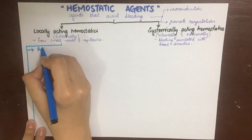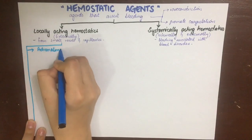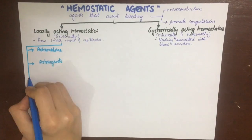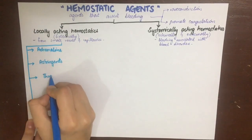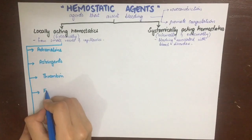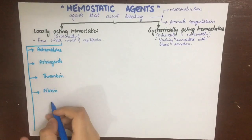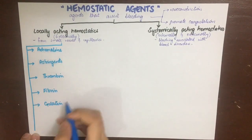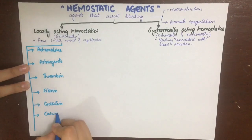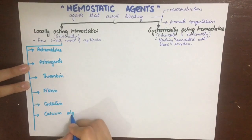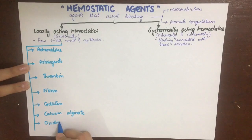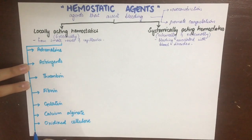The locally acting hemostatics are: first, adrenaline; second, astringents; third, thrombin; fourth, fibrin; fifth, gelatin; sixth, calcium alginate; seventh, oxidized cellulose; and eighth, heme coagulase.